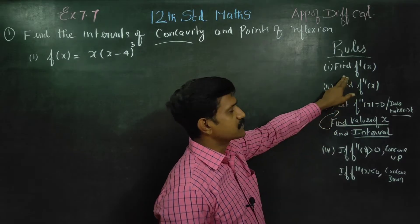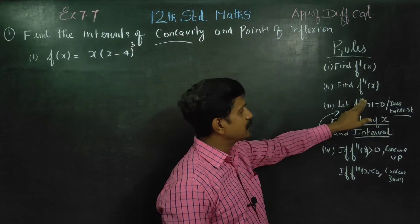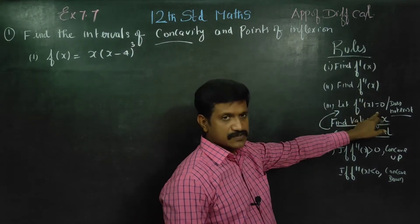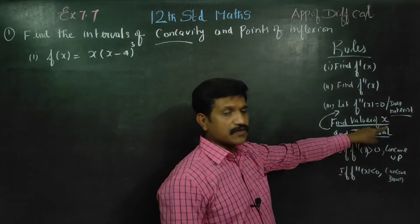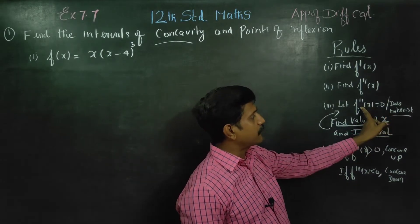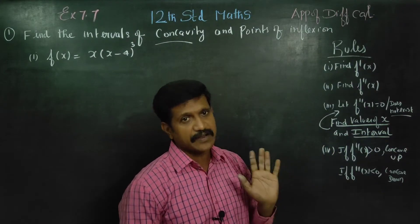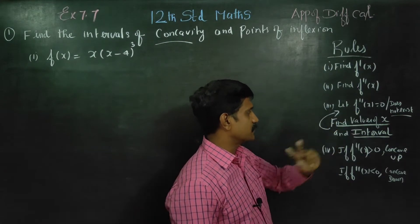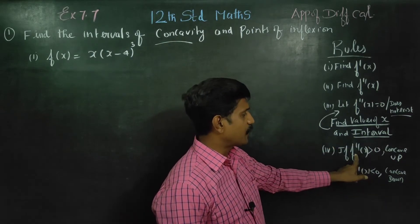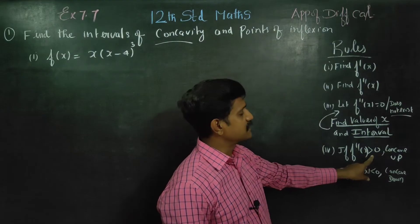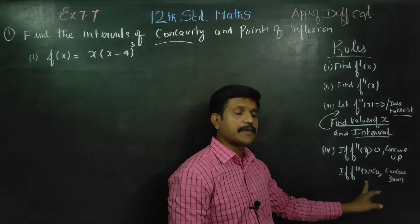The rules are: first find f'(x), then find f''(x), then put f''(x) equal to 0 and you will get the values of x. Or, you can get the values of x if f''(x) does not exist. There are two chances. After finding the intervals, check for f''(x). If it is greater than 0, it is called concave up. Concavity means either concave up or concave down.